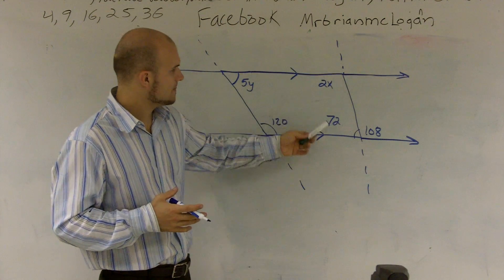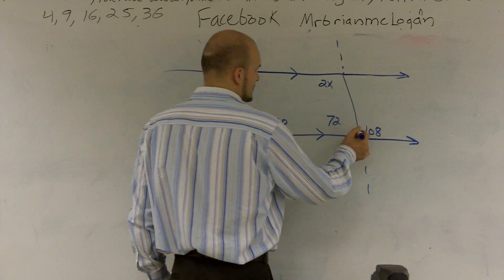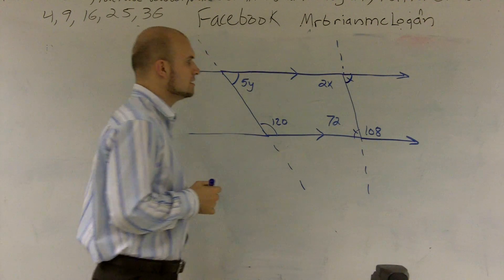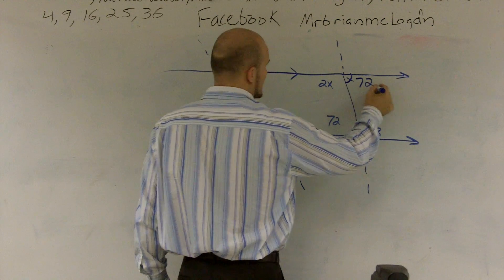All right, so since these two lines are equal, I know that 72, this and this angle are what we call alternate interior angles. So therefore, this is equal to 72.